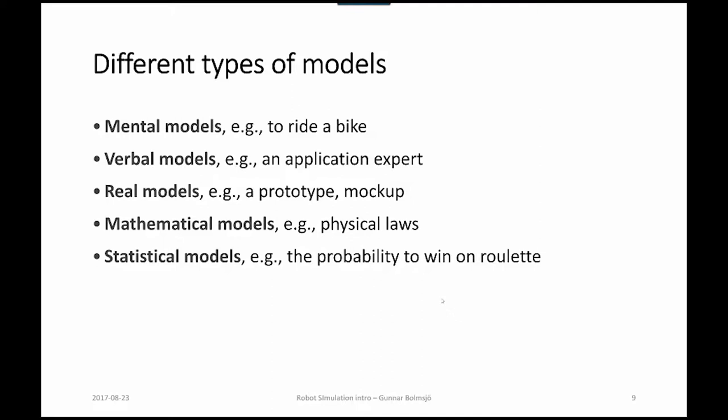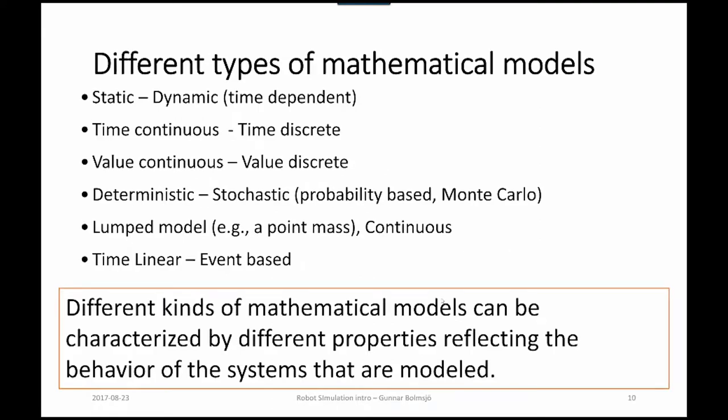Statistical models like probability to win on roulette for example. And different types of mathematical models could be static or dynamic, time-dependent, time-continuous or time-discrete, value-continuous or value-discrete, deterministic or statistics like probability-based or Monte Carlo in statistics, lump-model, time-linear event-based. So different kinds of mathematical models can be characterized by different properties reflecting the behavior of the system that are modeled.